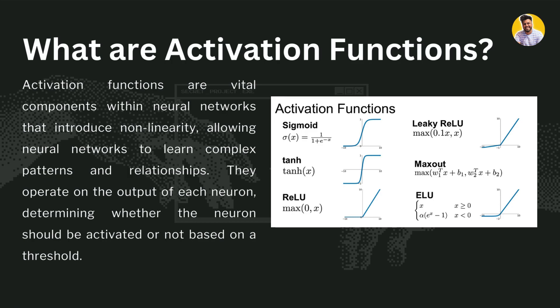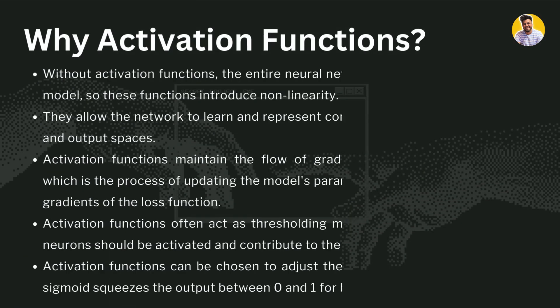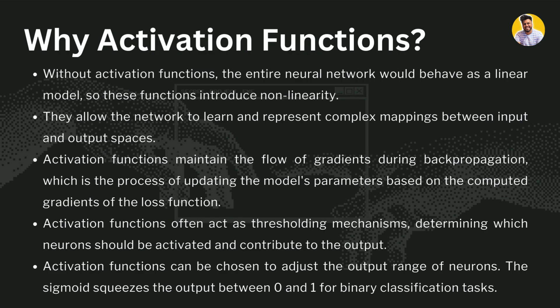We have many activation functions — such as sigmoid, tanh, ReLU, leaky ReLU, maxout, and ELU — that can be used based on the use case. The question then is: why do we use activation functions? If we don't use them, our neural network will simply behave like a linear regression model.